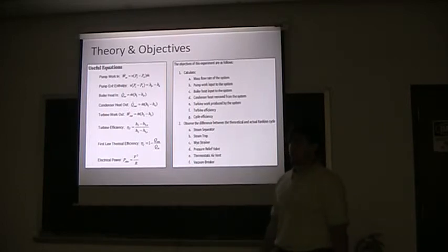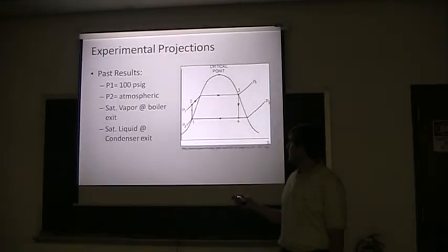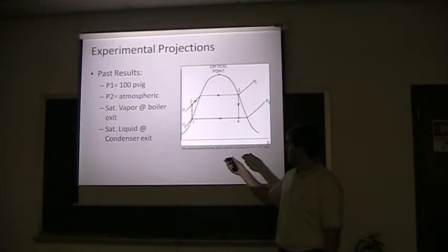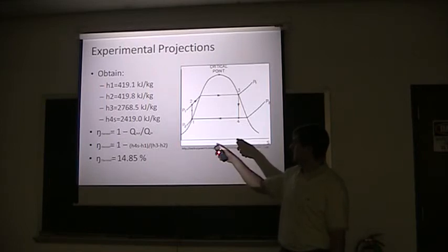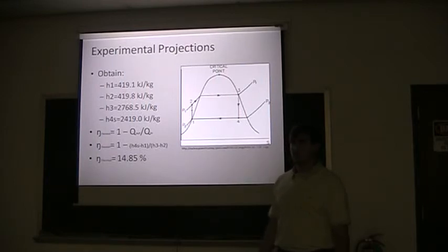And then some of these objectives we want to do, we want to find the efficiency, big ones, we want to find the efficiency of the turbine, and we want to find the efficiency of the cycle. And we just want to know what some of the stuff to do, like to see some of the steam traffic. Okay, for our objectives, the past results said they had a P1 of about 100 psi gauge, and P2 is atmosphere. And then points saturated vapor at the boiler exit, and then saturated vapor at the community exit. So, using those numbers, I got our H2 here, and then that gave us a thermal efficiency of 14.25, which is kind of low.